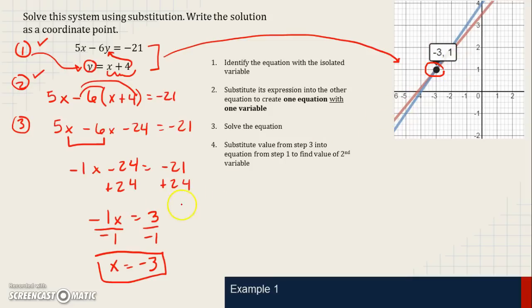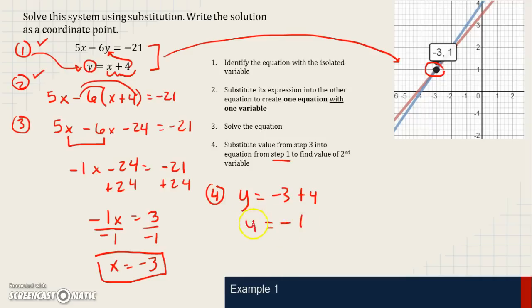We've got the correct x value that we saw on the graph. Now step 4 is to substitute this value for x back into the step 1 equation — the equation with the isolated variable. We substitute negative 3 in for x, giving us y equals negative 3 plus 4. Simplifying: negative 3 plus 4 is positive 1, so y equals 1.